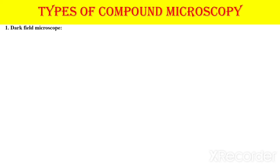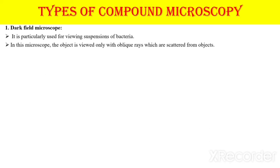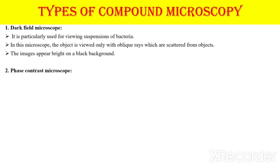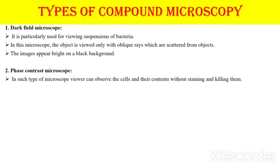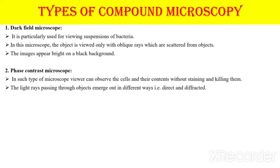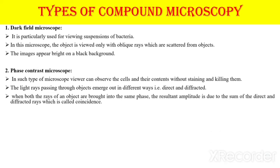There are different types of compound microscope. The first is the dark field microscope, used particularly for viewing suspensions of bacteria. The object is viewed only with oblique rays scattered from objects, and the image appears bright on a black background. The second is the phase contrast microscope, where we can observe cells and their contents without staining or killing them. Light rays passing through objects emerge in different ways — direct and diffracted — and when both rays are brought into the same phase, the resultant amplitude due to the sum of direct and diffracted rays causes the object to look very bright in the field.